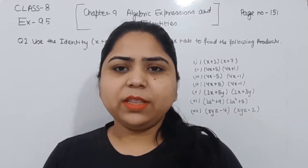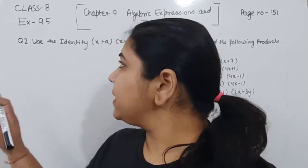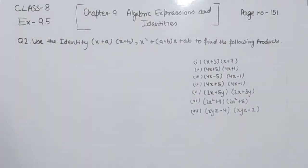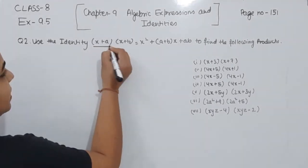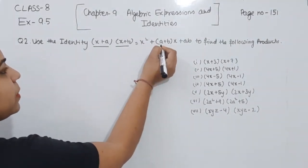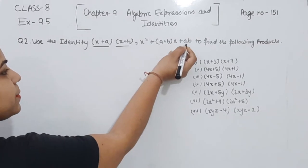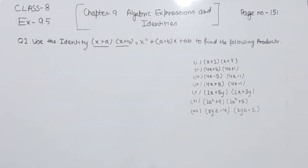Hello everyone, this is Preeti. We are going to do another question of Exercise 9.5, page number 151, question number 2. Use the identity: (x + a)(x + b) is equal to x squared plus (a + b) multiplied by x plus a·b, and find the product of the following.